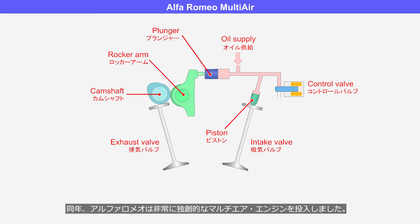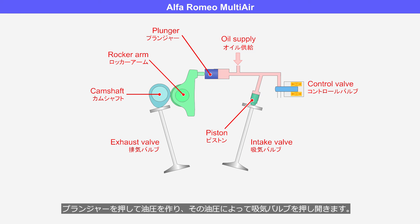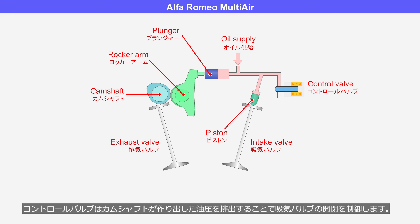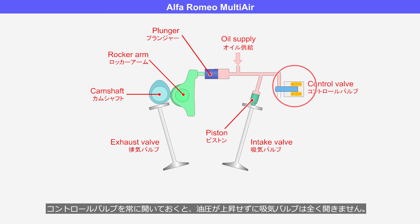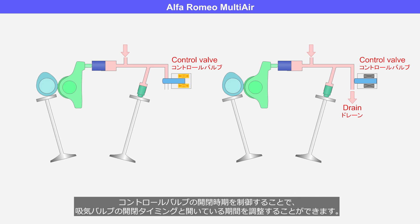In the same year, Alfa Romeo introduced a highly innovative MultiAir engine. The camshaft opens the exhaust valve similar to a conventional engine, and also presses the plunger to generate hydraulic pressure that opens the intake valve. The control valve controls the opening and closing of the intake valve by releasing the hydraulic pressure. If the control valve remains closed at all times, all the hydraulic pressure generated by the plunger opens the intake valve. If the control valve remains open at all times, the intake valve will not open at all as the hydraulic pressure does not rise. By leveraging this feature, the MultiAir engine eliminates the use of a throttle valve. By controlling the opening and closing timing of the control valve, it is possible to adjust the timing and duration of the intake valve's opening and closing.